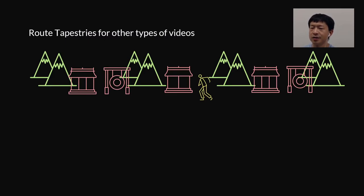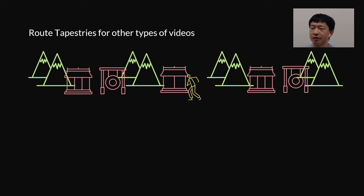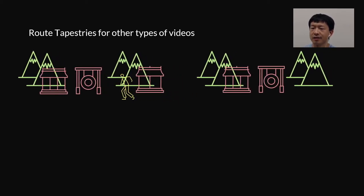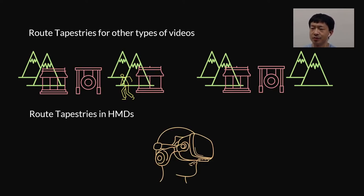Our future work plans to explore Root Tapestries for navigating a wider range of 360 videos. For example, we want to explore tapestries consisting of multiple layers where objects at different distances from the camera can move at different paces, like the parallax scrolling effect in video games. We are also interested in adapting Root Tapestries for head-mounted display uses — for example, placing Root Tapestries in a circle surrounding the user.